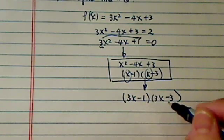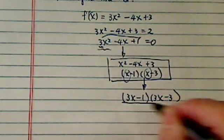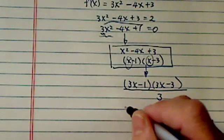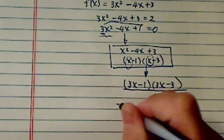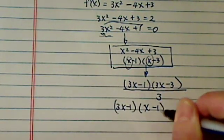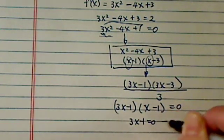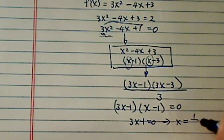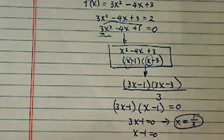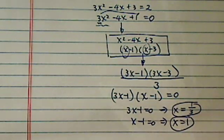Obviously 3x times 3x is not 3x squared, so we're going to divide it by 3 to normalize it. So we simplify to (3x-1)(x-1) = 0. So I have 3x minus 1 equal to 0, which gives me x equal to 1/3. That's one of them. X minus 1 equal to 0, which gives me x equal to 1.